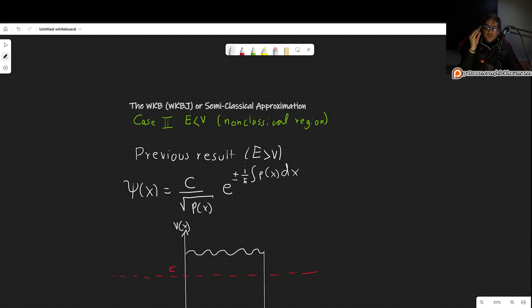Welcome. In this video, we will begin discussing the second case for the WKB or semi-classical approximation. That is the case where the energy is smaller than the potential. And for that reason, we will call this the non-classical region.